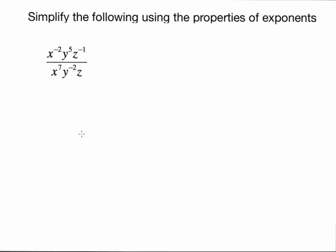The next example has variables being raised to both positive and negative exponents, and notice all we have is multiplication and division — there's no addition, there's no subtraction. A common misconception with negative exponents such as x to the negative 2 is that the negative exponent makes the entire expression negative. Students will bring down that negative sign and make this a negative 2x, or make this negative x to the second power, but that is not true.